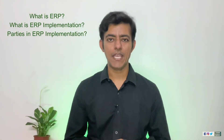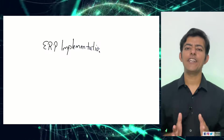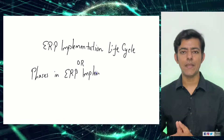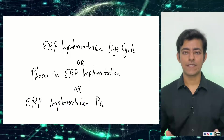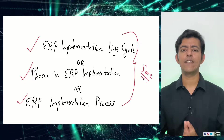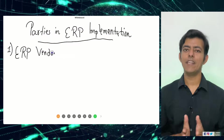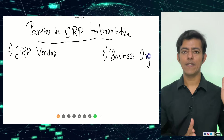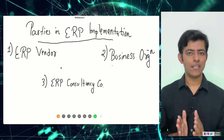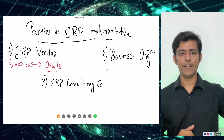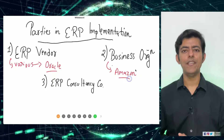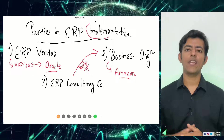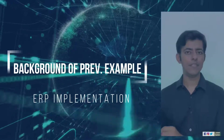In this video we are going to understand about the ERP implementation life cycle. Before we proceed, I would request you to watch the previous video to understand what is ERP, what is ERP implementation, and what are the parties involved. There are three parties: one is the ERP vendor, second is the business organization, and the third is the ERP consultancy company. We have opted for Oracle as the ERP vendor and Amazon as the business organization, and there is an ERP consultancy company which helps the business organization implement the ERP.